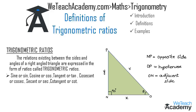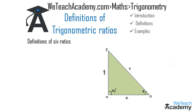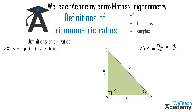Such ratios are called sine, cosine, tangent, cosecant, secant, and cotangent. Let us begin with sine theta: sine theta is opposite side divided by hypotenuse. The side opposite to theta is NP, so sine theta equals NP divided by OP, which gives us y divided by r. Therefore, sine theta equals y by r.